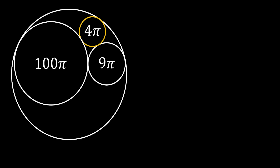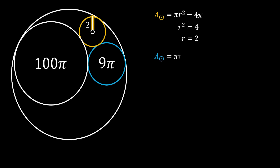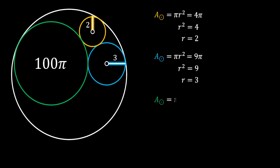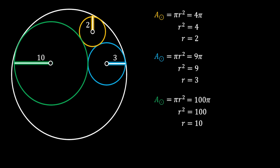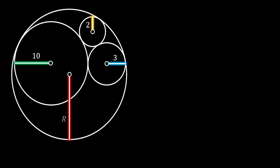Let's take a look at the smallest circle. We can calculate its area using the formula π r². Since the area of this circle is 4π, we get that the radius is equal to 2. For the middle circle with area 9π, the radius is equal to 3. And for the biggest inner circle with area 100π, the radius is equal to 10. Finally, let's label the radius of our outer circle as r.